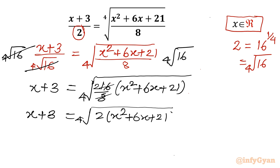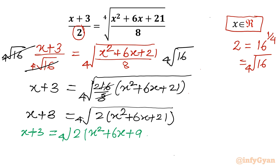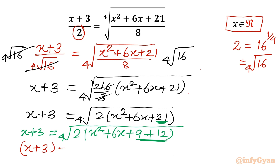Now I will split 21 as 9 plus 12. So x plus 3 equals the 4th root of 2 times the quantity x squared plus 6x plus 9 plus 12. From the first three terms, x squared plus 6x plus 9 can be written as x plus 3 whole squared. So the right hand side becomes the 4th root of 2 times x plus 3 whole squared.